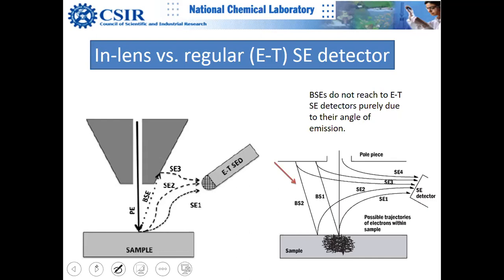This is where the invention of in-lens versus regular ET (Everett-Thorne) detector design becomes important. The secondary electron detector can attract all kinds of SE1, SE2, and SE3 because it is positively charged. These take zigzag paths and all get pulled to the detector.